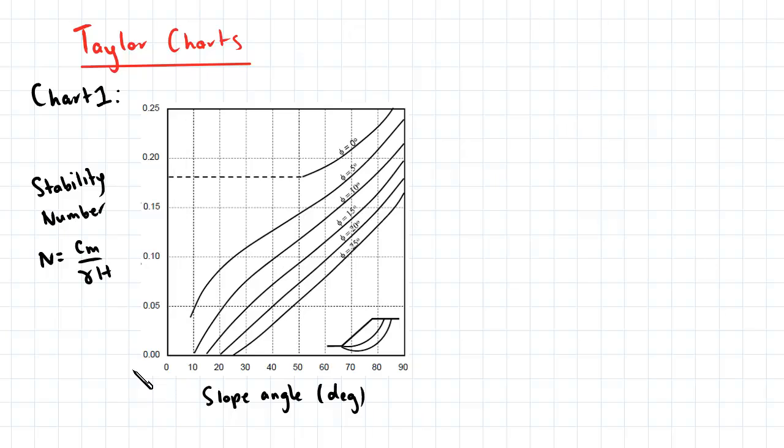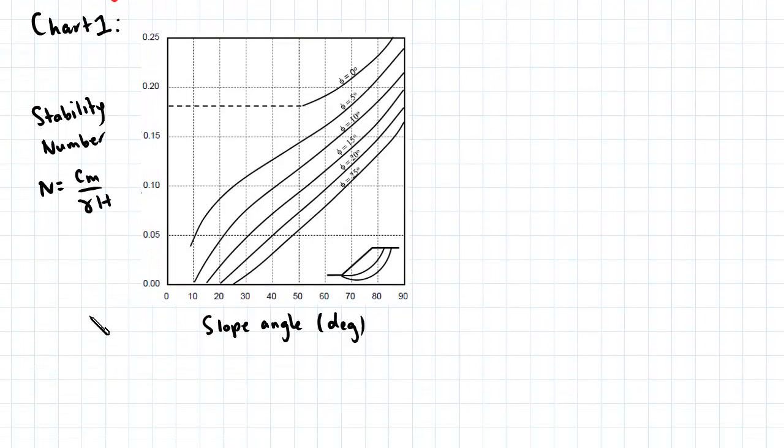So the way to use this chart, first you need to determine the angle of the slope. And from there you project vertically upwards until you intersect with the angle.